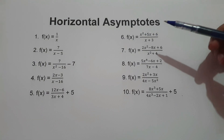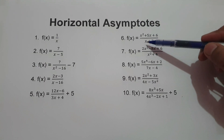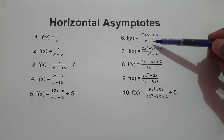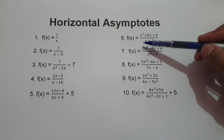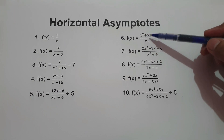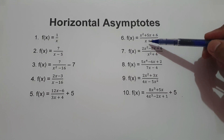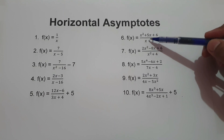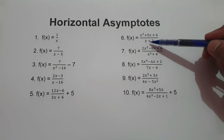On number six: f of x equals x squared plus 5x plus 6 all over x plus 3. Number six falls on case number three because the degree of the numerator is greater than the degree of the denominator, so there is no horizontal asymptote. But if the degree of the numerator exceeds the degree of the denominator by exactly one, we can say that we have an oblique asymptote.